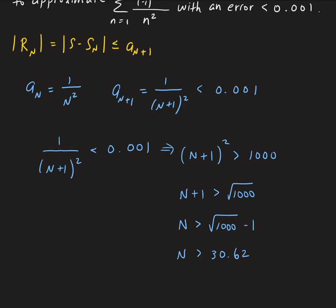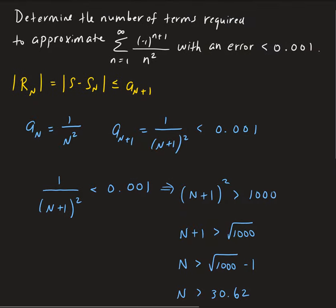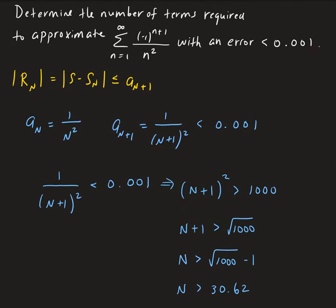But remember that n has to be a whole number. So that means n has to be greater than or equal to 31. That means we need at least 31 terms to get an error of less than 0.001.